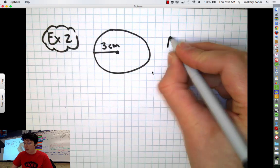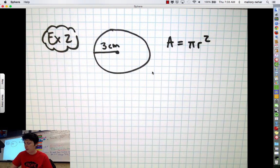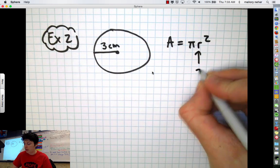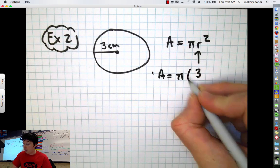Okay, so hopefully you've paused the video, but now I'm going to show you the steps. So formula, area equals pi r squared. Numbers. Well, r in this problem is three. So area equals pi times three squared.